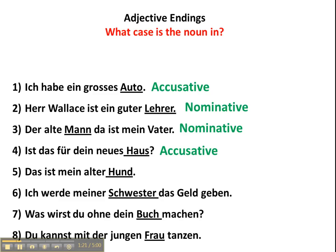Das ist mein alter Hund. Hund here is going to be nominative case, because again it's the predicate nominative — it comes after a conjugation of the verb sein, in this case ist. Ich werde meiner Schwester das Geld geben. In this case it's dative. Schwester is the indirect object — you're giving the direct object, which is Geld or money, to the sister.